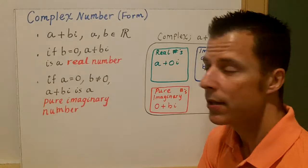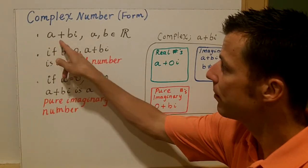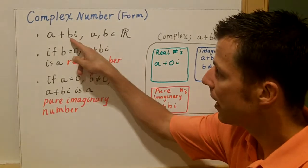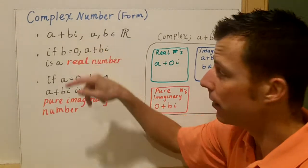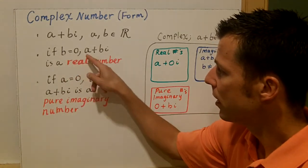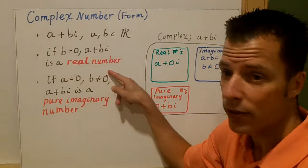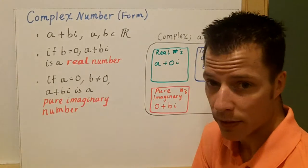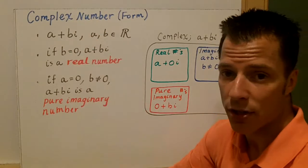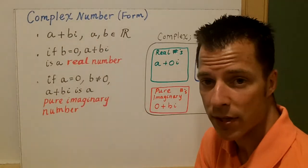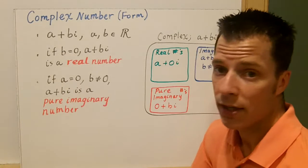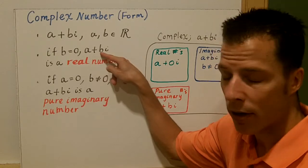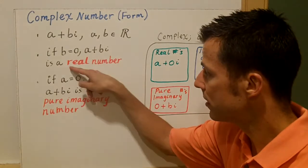So what does a complex number look like? The form is a plus bi, where a and b are real numbers. Bi is what we would call the imaginary part. If b is zero, then a plus bi is a real number. For example, if we had five plus zero-i, that's still a real number. That is why the complex numbers form the largest set — because you can take any real number and add zero-i to it, and you've got a complex number.